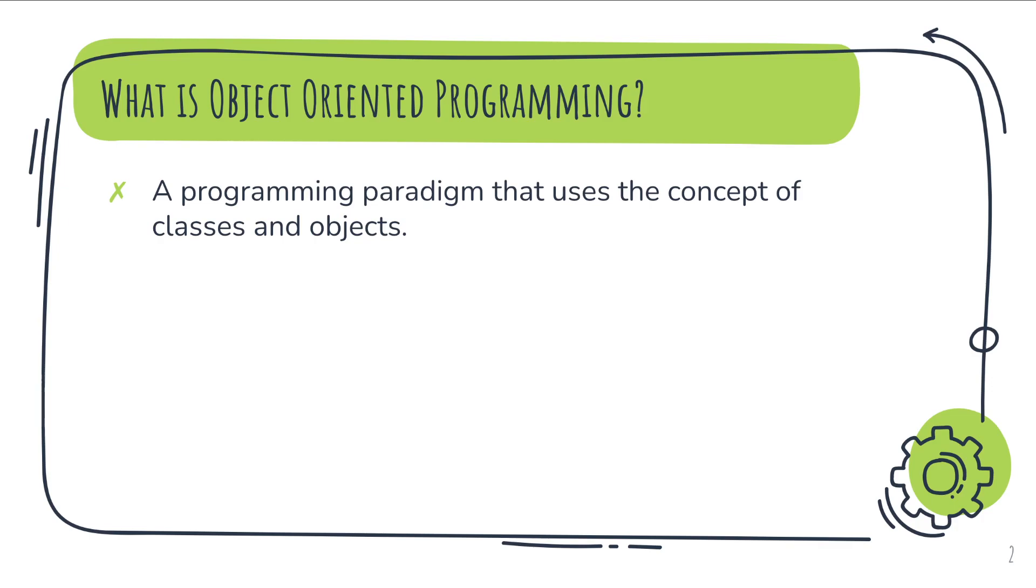Object oriented programming is used to structure our application's code into simple reusable pieces of code that are called classes. And I will teach you everything by writing code, so don't worry if you are a little bit confused now.